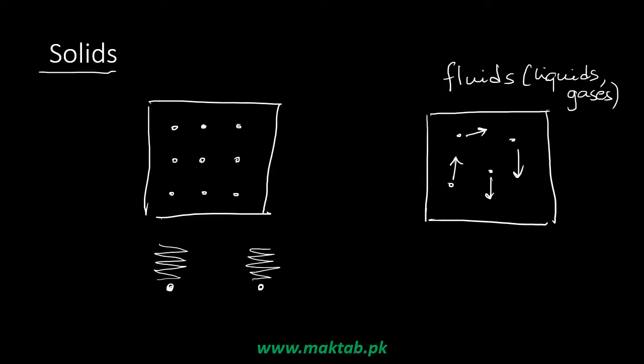But between atoms, the mean position is not changed and the mean distance is not changed. These electrical forces can be modeled as springs — it's like a spring. That's why we can deform solids and they return to their original position.